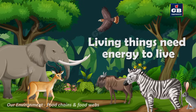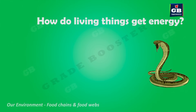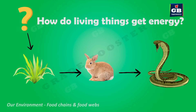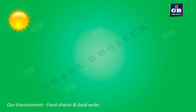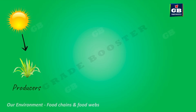Food chains and food webs: living things need energy to live. A snake gets energy by eating a rabbit — the energy flows from rabbit to snake. The rabbit gets energy from the plant it eats. The plant gets its energy from the Sun, so the Sun is the ultimate source of energy. Plants convert solar energy into chemical energy, which is food — that is why plants are called producers.